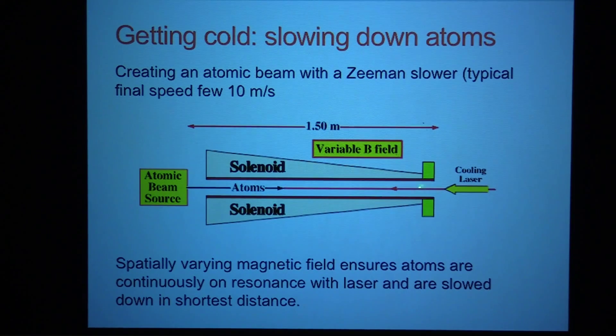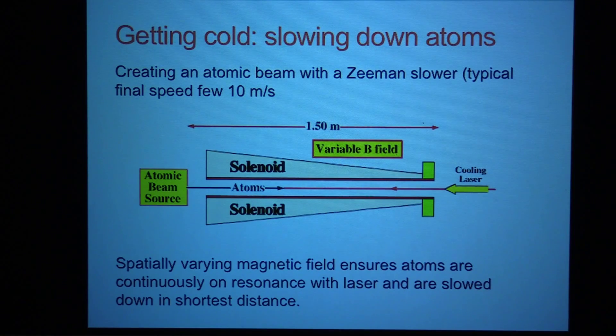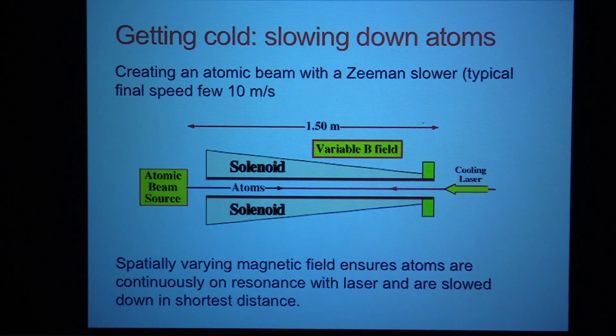So here's a device we have, for example, in my lab. It's called the Zeeman slower, which achieves this. You start with a source of atoms, typically a chunk of metal which you heat up to produce a vapor, passes through a hole that produces an effusive beam, and then this beam travels down a tube, and you shine a laser from the other side that slows down the atoms. And to keep the atoms continuously on resonance as their Doppler shift changes, we just have a solenoid here which produces a spatially varying magnetic field, which through the Zeeman shift keeps the atoms on resonance. And this way we can end up with atoms slowing down from 1,000 meters per second down to maybe a few 10 meters per second. And that's slow enough at that point that we can capture them in a trap.